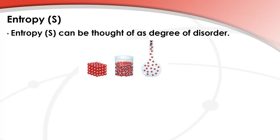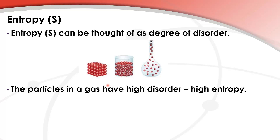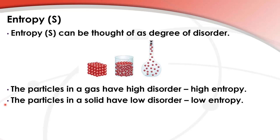In a liquid the particles are free to move around a bit more, therefore they have a higher degree of disorder and a higher entropy than solids. In a gas the particles are free to move around, so they have high entropy and are very disordered. The particles in a solid have low disorder, therefore solids have low entropy.